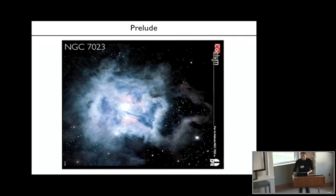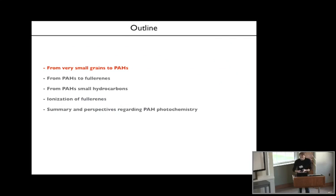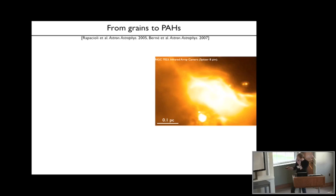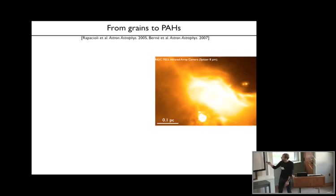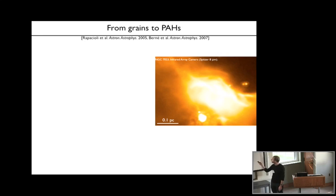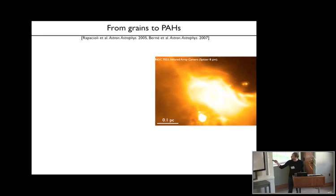Now back to the presentation itself. The first part will be about the conversion of very small grains to PAHs. This is NGC 7023 again, this time seen in the mid-infrared at 8 microns with Spitzer—a zoom on the northern part of the nebula. The star is here and these filaments appeared in red in the previous image. At 8 microns, the emission is mainly due to polycyclic aromatic hydrocarbons, and you can see these filaments are extremely bright at mid-infrared wavelengths.